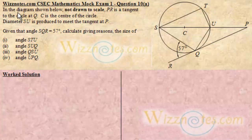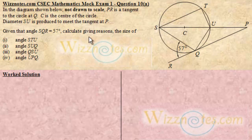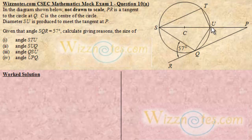It reads: in the diagram shown, not drawn to scale, PR is a tangent to the circle at Q. C is the center of the circle. Diameter SU is produced — meaning lengthened — to meet the tangent at the point P. Given that angle SQR equals 57 degrees, that's angle SQR, equals 57 degrees.